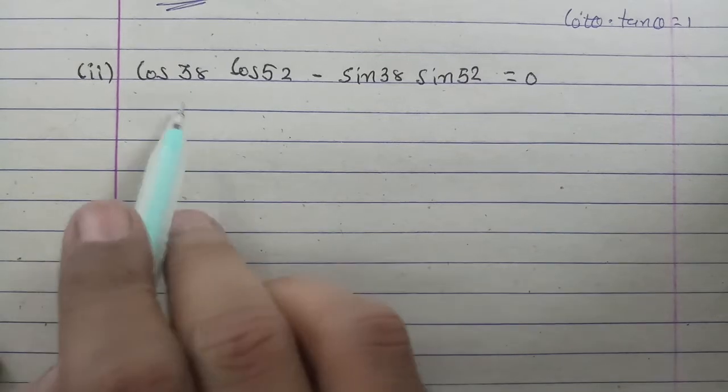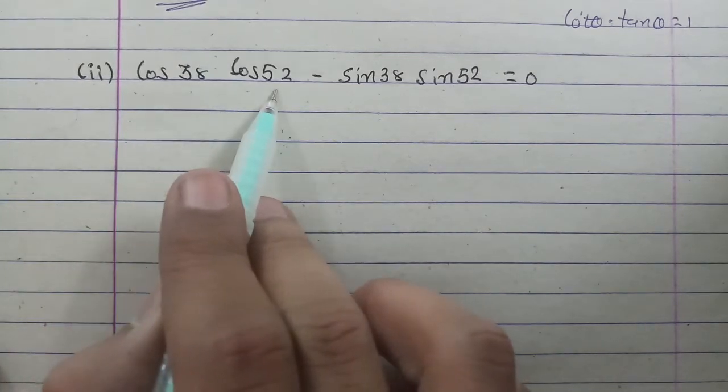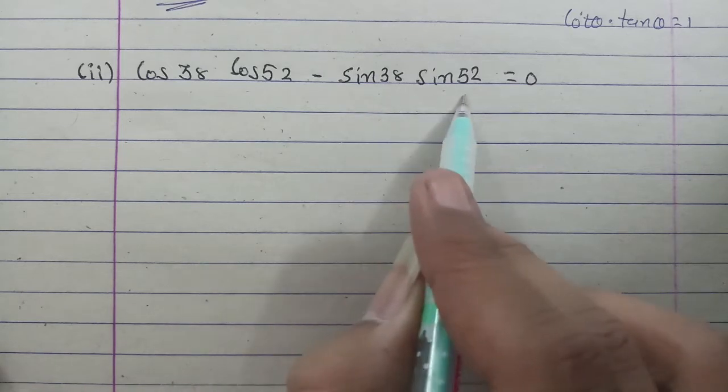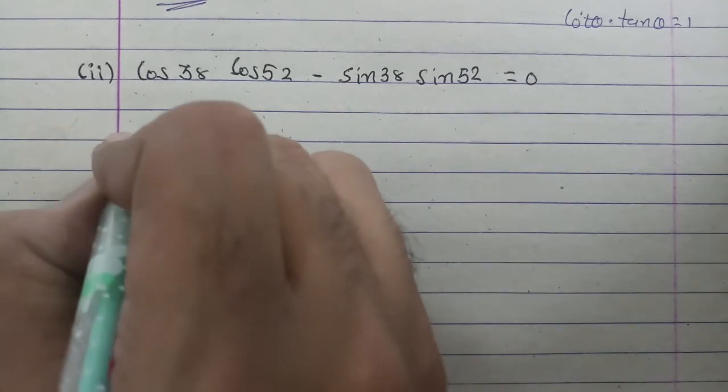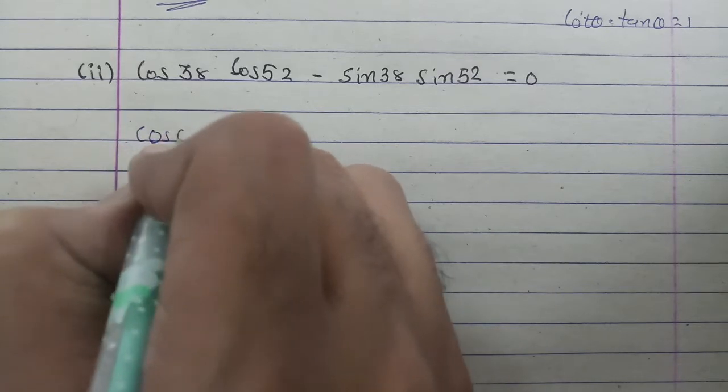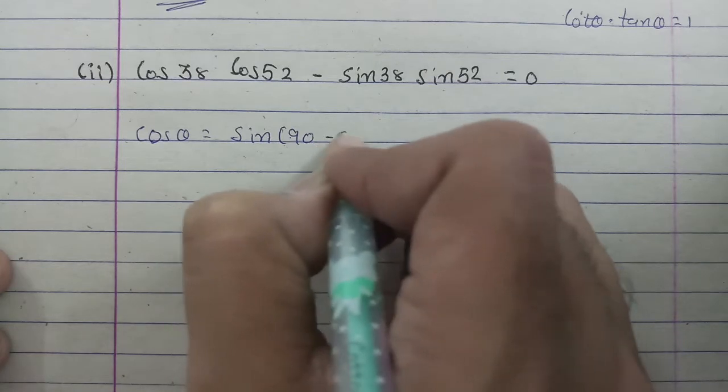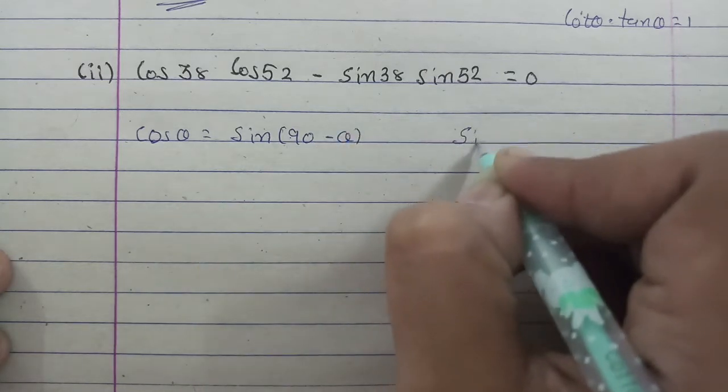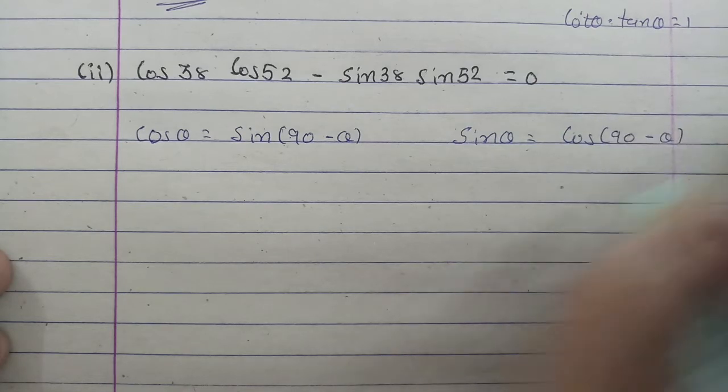Next we will continue with the second sum: cos 38° cos 52° - sin 38° sin 52° = 0. We do have the formula. cos θ = sin(90° - θ) and sin θ = cos(90° - θ).